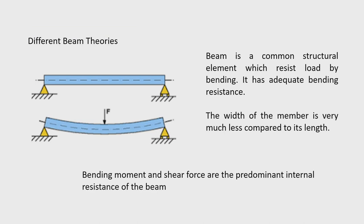Let us see what a beam actually is. A beam is a common structural element found in many applications — in buildings, in bridges, in aircraft — everywhere you will find components behaving like a beam. This beam resists load by bending and has adequate bending resistance compared to resistance due to torsion and other effects. So bending resistance is the most significant here.